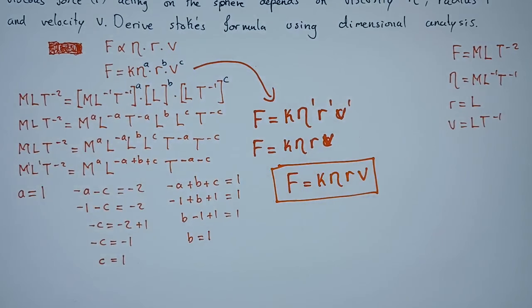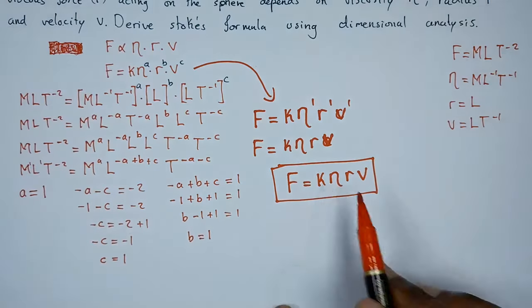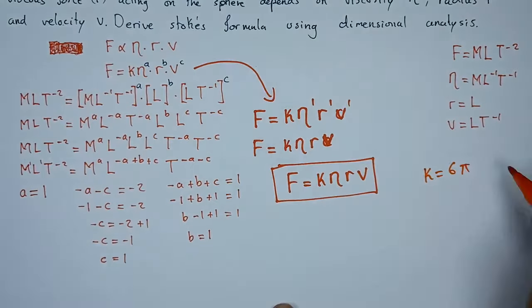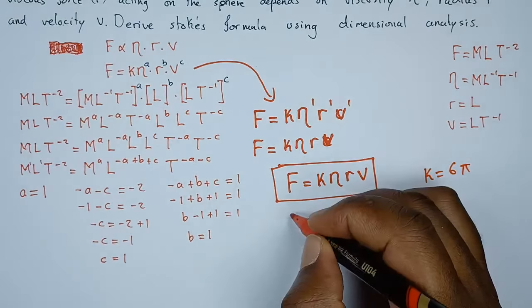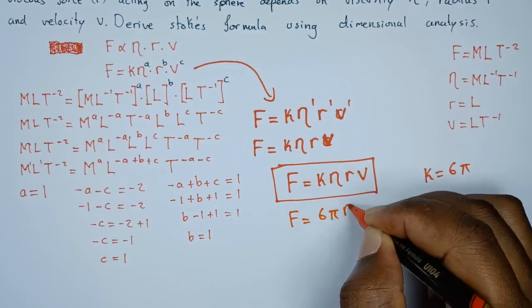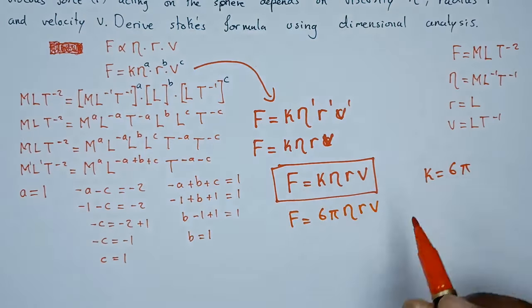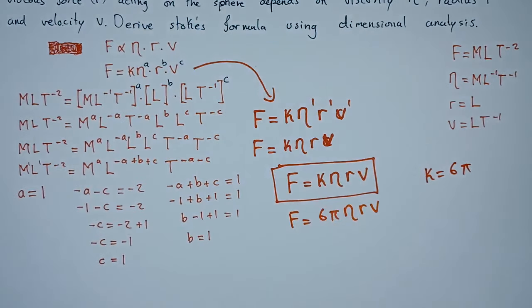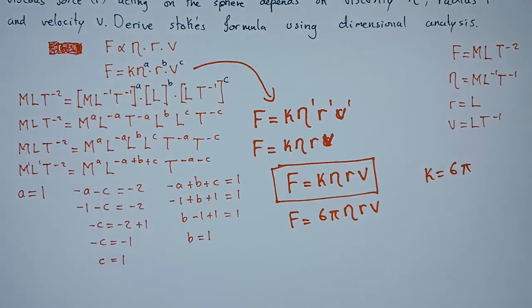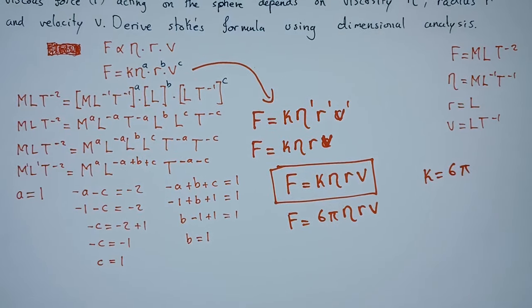K is a constant, and this constant can be anything. With correct computations, you'll discover that Stokes formula, the value of K equals 6π. So the actual Stokes formula is F equals 6π η r v. But since we don't know the value of K from dimensional analysis alone, you can just leave it as K. That's how we derive Stokes formula.